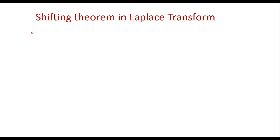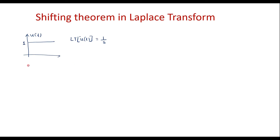We have already studied the Laplace transform of standard functions. For example, we know that the unit step signal u of t has a Laplace transform of 1 over s. Also, we have studied the ramp signal r of t, and we know that the Laplace transform of r of t is 1 over s squared.